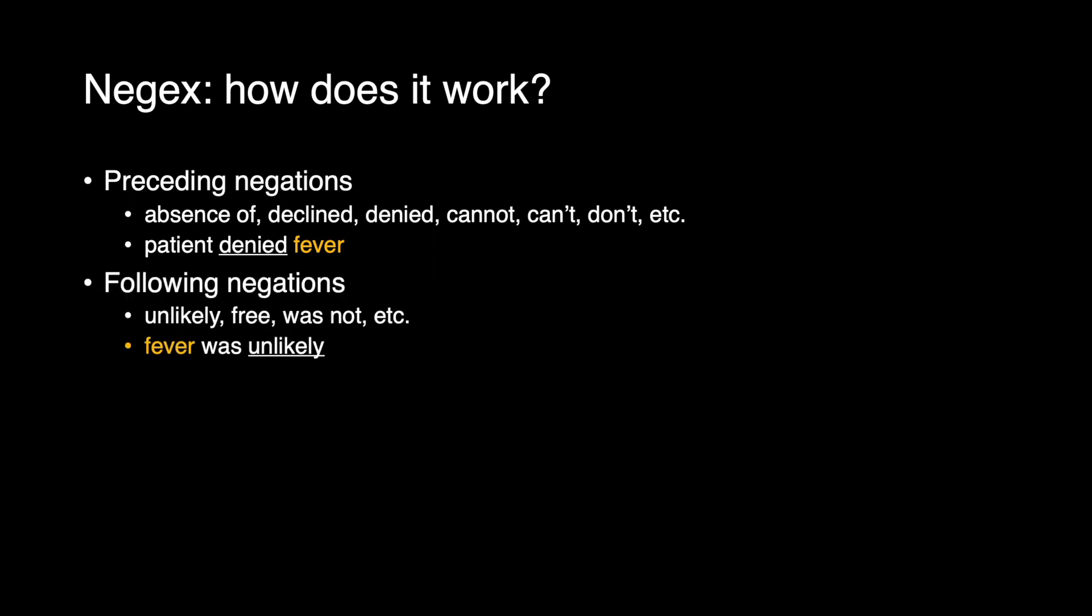The next dictionary is following negations. These are keywords such as unlikely, free, was not. They follow behind the entity. For example, fever was unlikely.